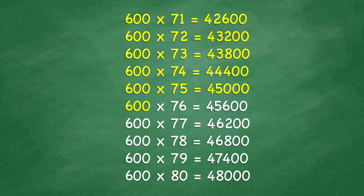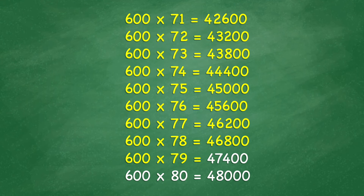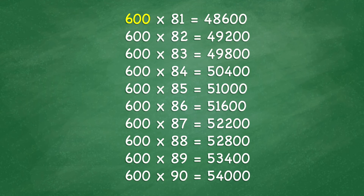600 x 76 equals 45,600. 600 x 77 equals 46,200. 600 x 78 equals 46,800. 600 x 79 equals 47,400. 600 x 80 equals 48,000. 600 x 81 equals 48,600.